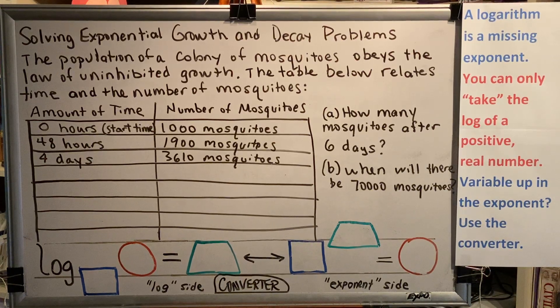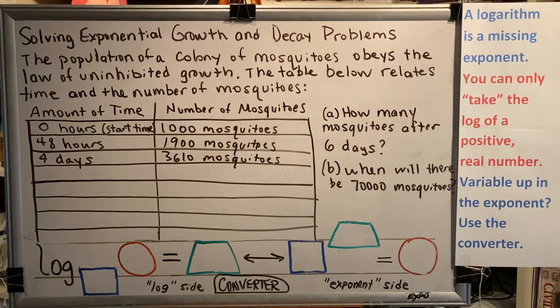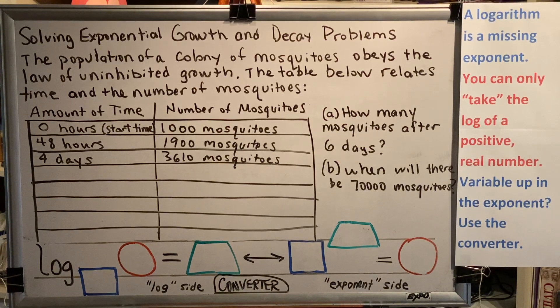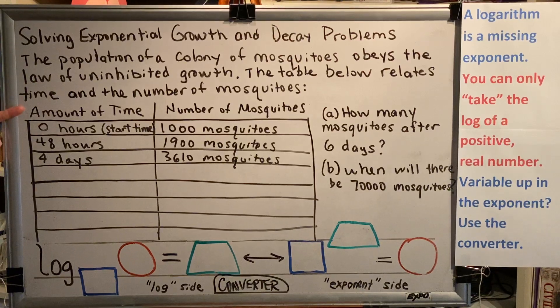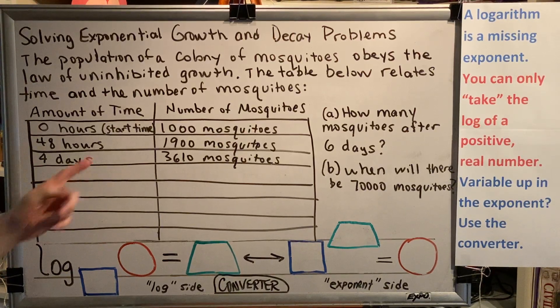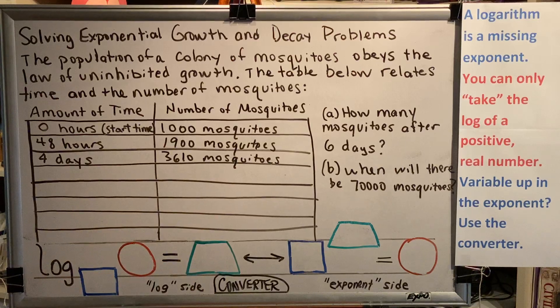Let's look at our problem. The population of a colony of mosquitoes obeys the law of uninhibited growth. That's a scary sentence. The table below relates time and the number of mosquitoes. Here's our table. Our first column is the amount of time, and our second column is the number of mosquitoes.